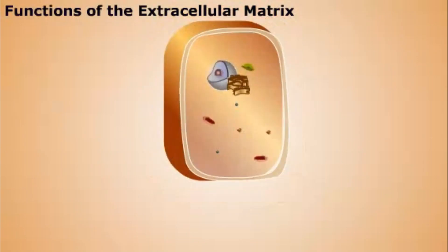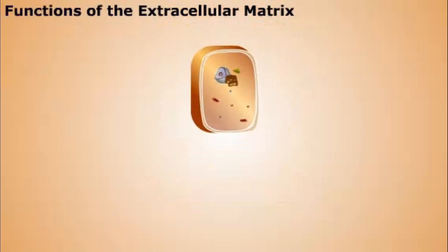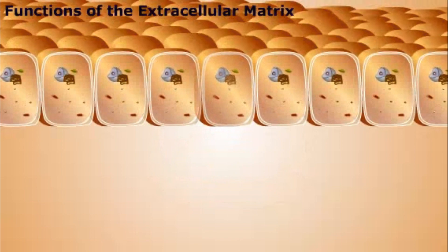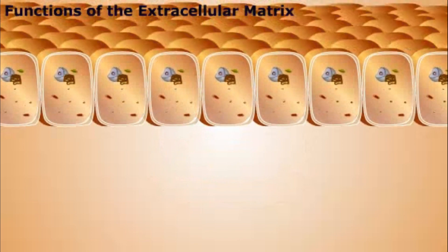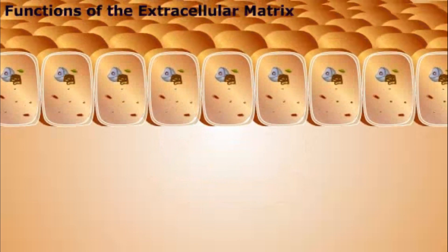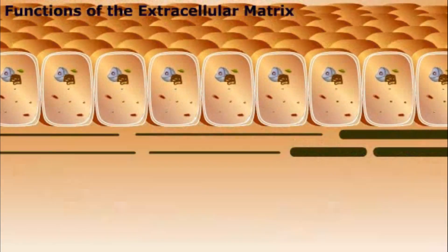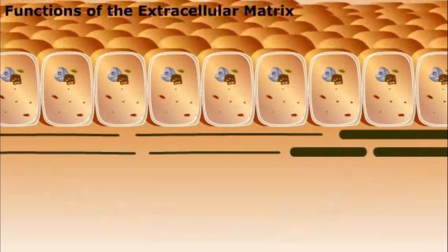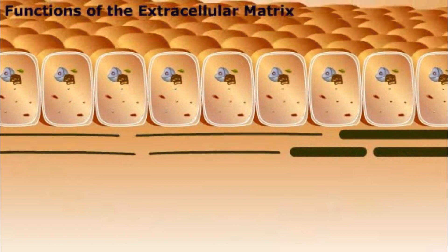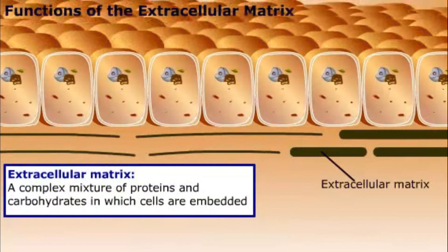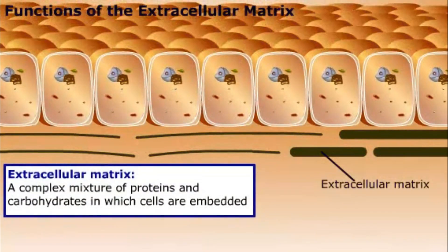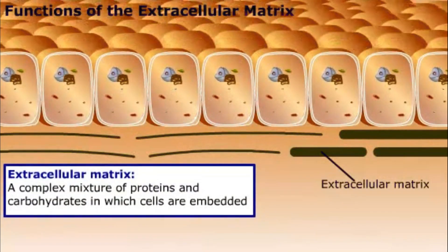By now, we've got a good idea of what's inside a cell. But remember that in multicellular organisms, cells are organized into tissues. How do the cells in a tissue stick together? The answer is a complex structure called the extracellular matrix.